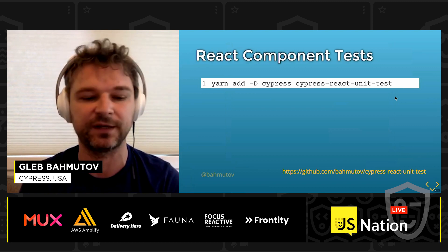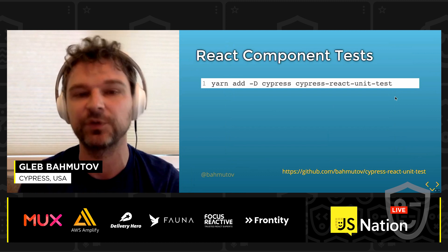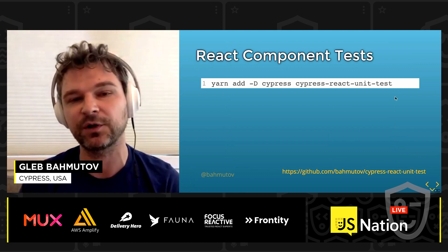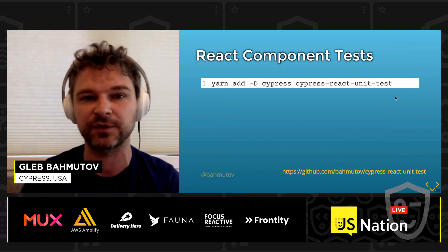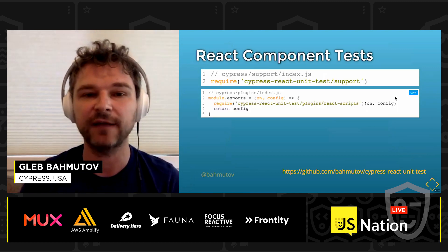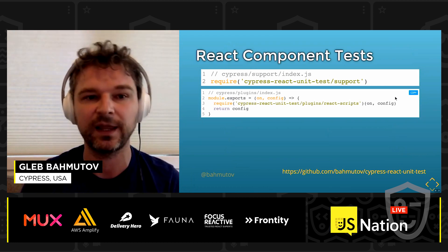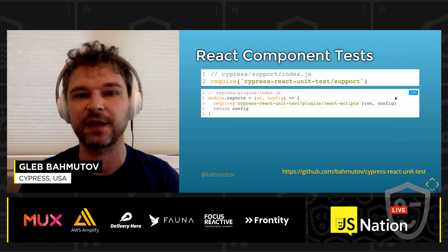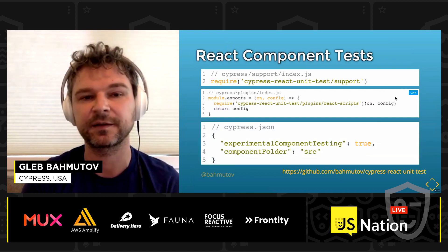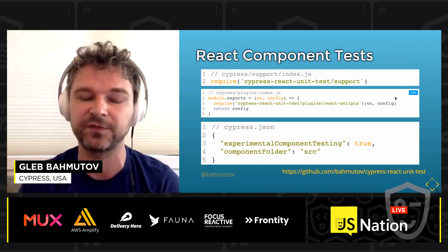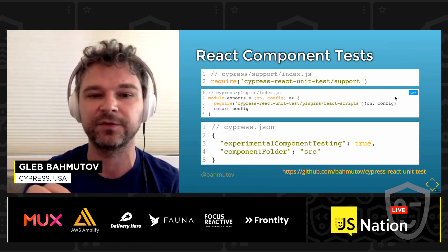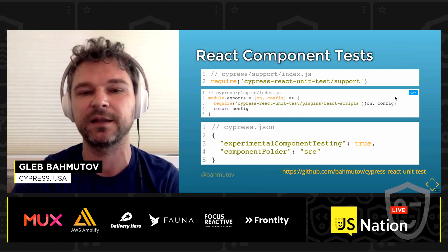Let's write component tests. I'm going to install Cypress, which is open source, free to use, MIT license test runner. I'm also going to install Cypress React Unit Test, which is an adapter for Cypress that allows you to mount React components directly. I'll add Cypress React Unit Test to the Cypress support file and to the plugins file, which will allow Cypress to bundle specs the same way the application bundles its code. Because this is still an experimental feature, I'll set in the Cypress config file experimental component testing to true and tell Cypress that my component tests live in the source folder next to the source files.